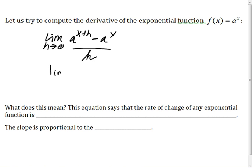Okay, it's the limit as h goes to zero. It's a to the x times a to the h minus a to the x all over h.